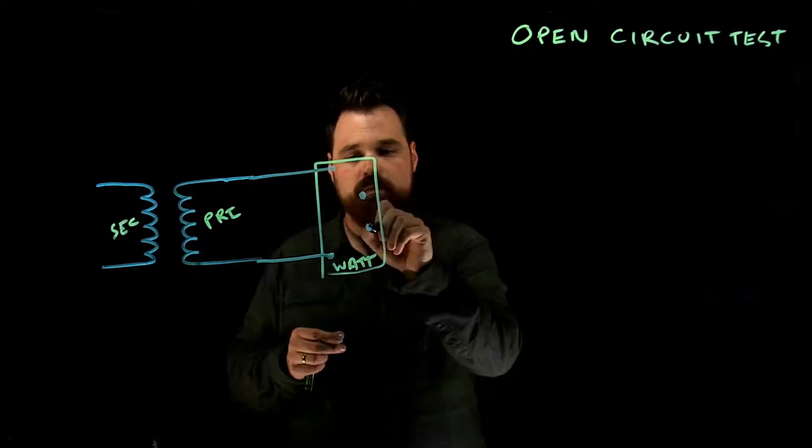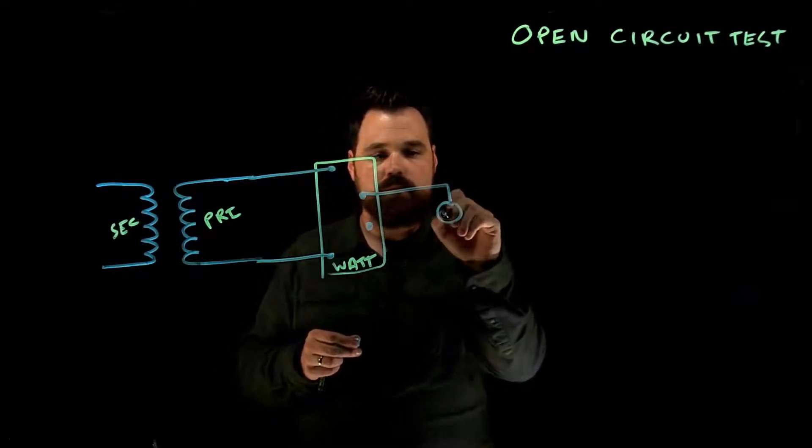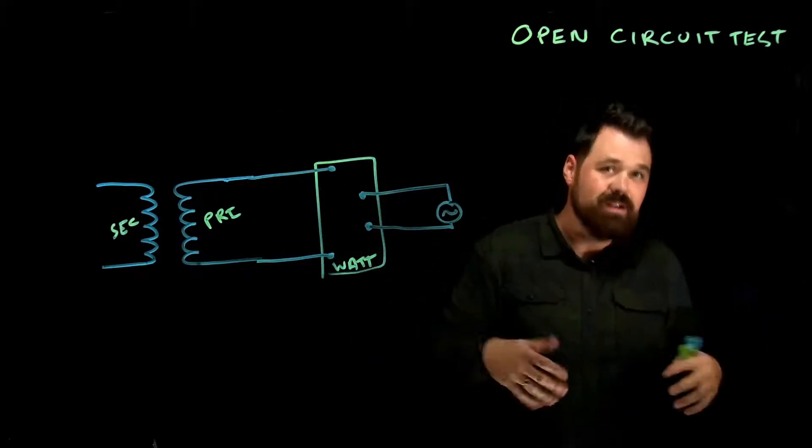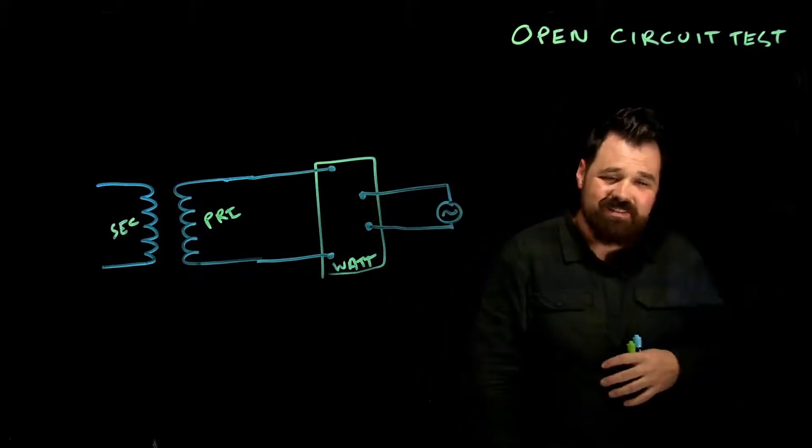The wattmeter is going to measure our voltage and our in-phase current. So we connect our source through the wattmeter, which is just a voltmeter and an ammeter measuring in-phase current, and that runs through.